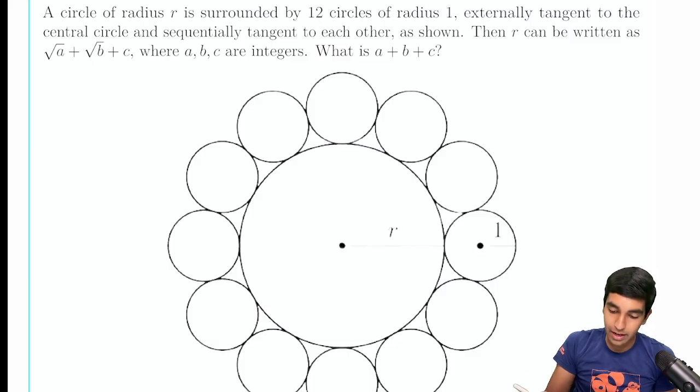Okay, so we have a circle of radius r, and it's surrounded by 12 circles of radius 1, externally tangent, and we're asked to find r.